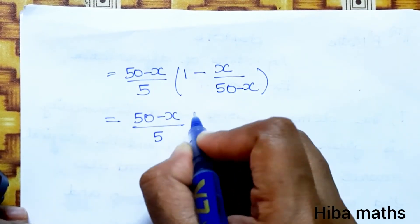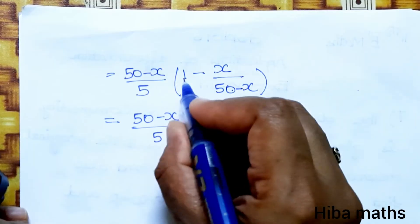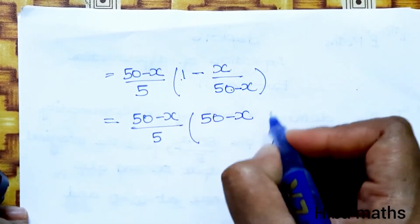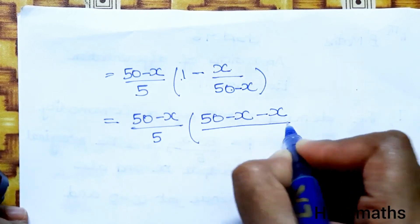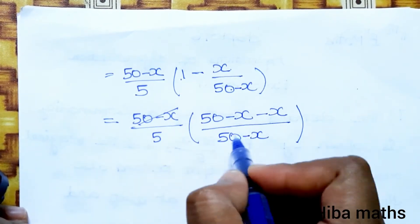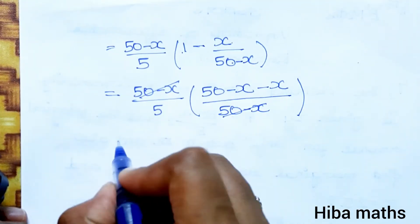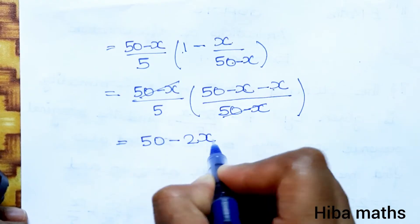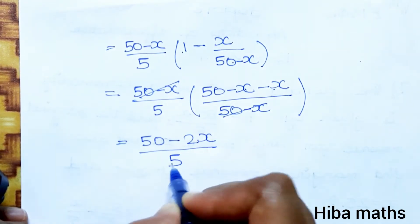MR equals 50 minus x by 5 times, in the numerator, 50 minus x times 1 minus x. That gives 50 minus x minus x equals 50 minus 2x, divided by 50 minus x. Cancel 50 minus x, so MR equals 50 minus 2x divided by 5.